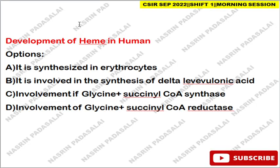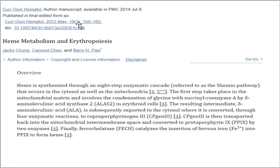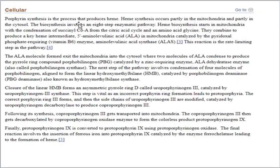The next question is about heme synthesis in humans. You can refer to an article published in 2014. Heme synthesis is an 8-step process. The first step takes place in the mitochondrial matrix and involves condensation of glycine with succinyl-CoA, catalyzed by delta-aminolevulinic acid synthase 2 in erythroid cells. It forms the intermediate gamma-ALA, which is exported to the cytosol where it is converted through four enzyme reactions into coproporphyrinogen. It is then transported back to the mitochondrial inner membrane, ultimately forming protoporphyrin IX (PPIX).